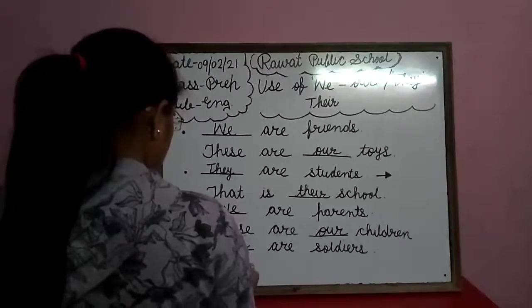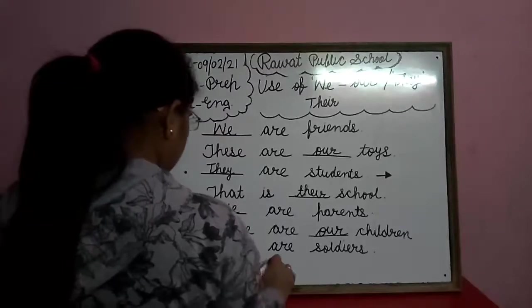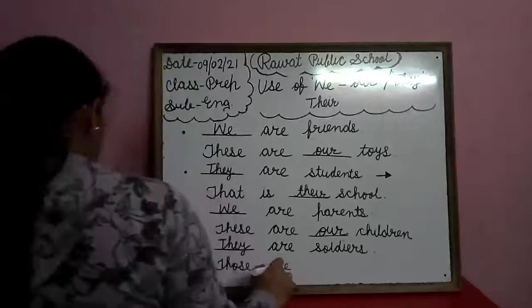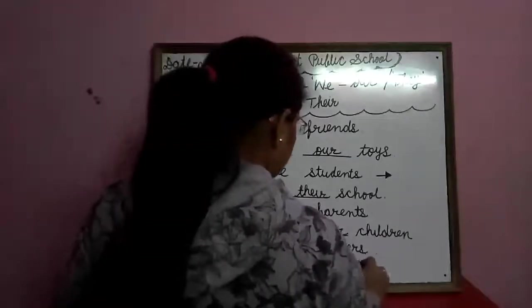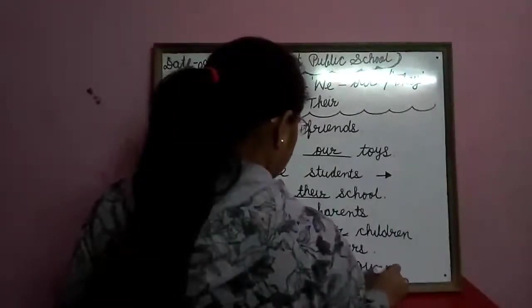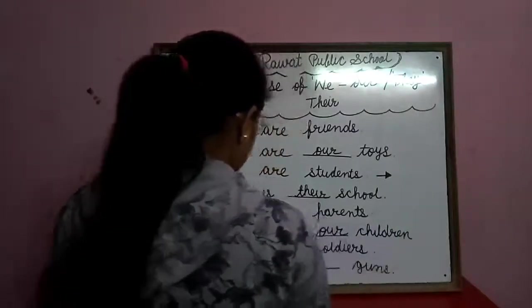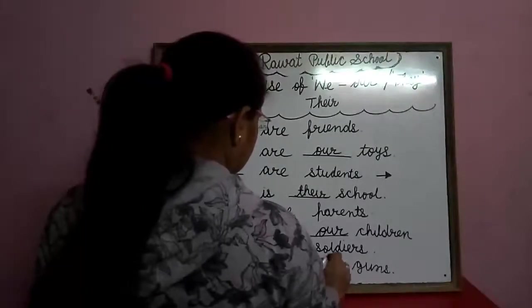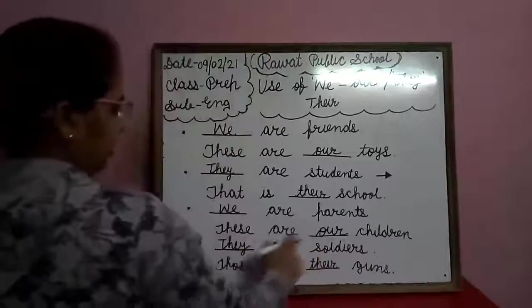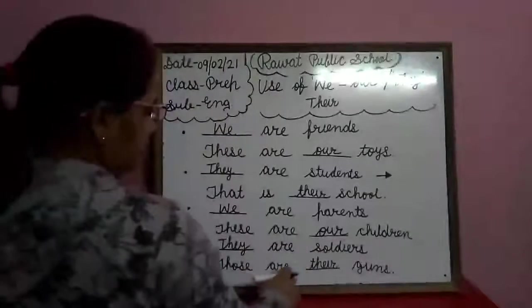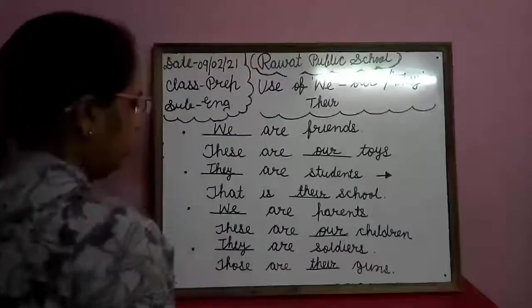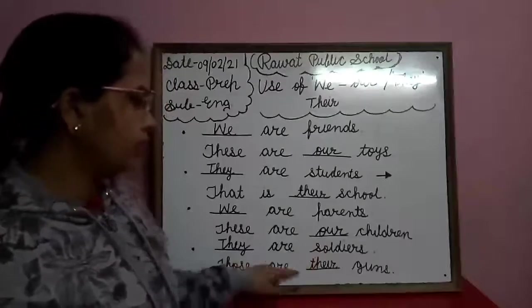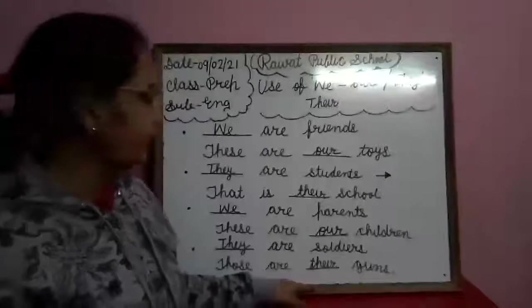Those are — T-H-O-S-E — those are dash guns, G-U-N-S, guns. Those are their — T-H-E-I-R. They are soldiers. Those are their guns. They are soldiers and those are their guns.